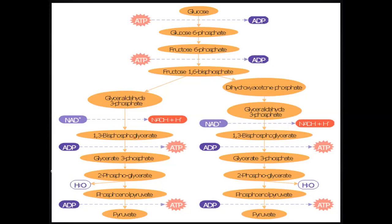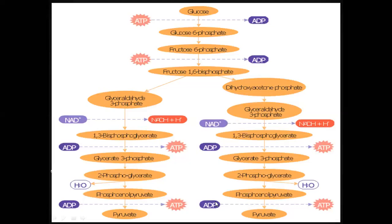Whether it is aerobic or anaerobic respiration, glycolysis will occur, but there is a difference in the level of energy production. Glycolysis is a process that is the breakdown of glucose and occurs in the cytosol of the cell. Glucose is converted through a series of steps: glucose 6-phosphate, fructose 6-phosphate, fructose 1,6-bisphosphate, glyceraldehyde 3-phosphate, 1,3-bisphosphoglycerate, 3-phosphoglycerate, 2-phosphoglycerate, phosphoenolpyruvate, and then pyruvate.